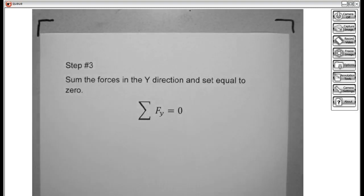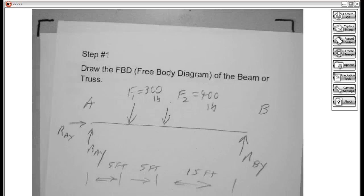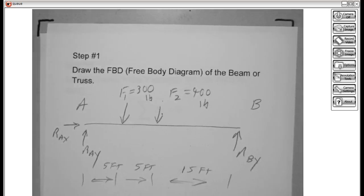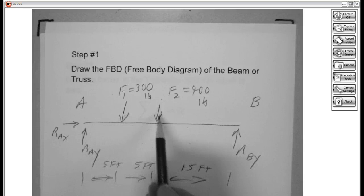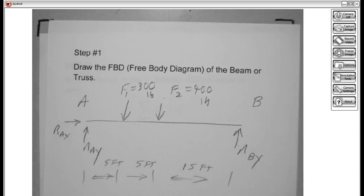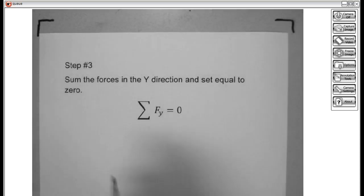That was the second step. Third step is to look at the sum of the forces in the y direction and set it equal to 0. Looking here, we've got several forces going up or down. We've got 1, 2, 3, 4 forces going up and down. Let's go ahead and state that.